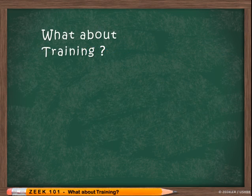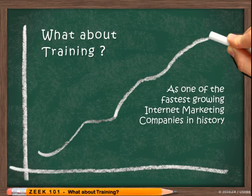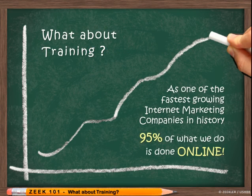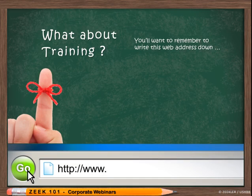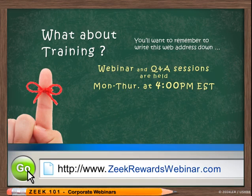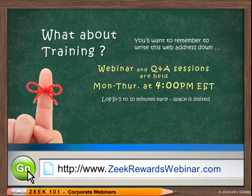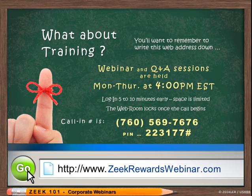As one of the fastest growing internet marketing companies in history, 95% of what we do is all done online, including training and updates. You'll want to remember to write this web address down, which is ZeekRewardsWebinar.com. Our webinar and Q&A sessions are held Monday through Thursday at 4pm Eastern, and you might want to log in 5-10 minutes early as space is limited and the web room locks once the call begins. The call-in number is 760-569-7676 and the pin code is 223177.